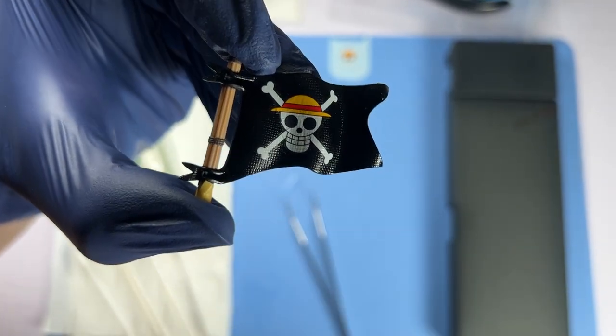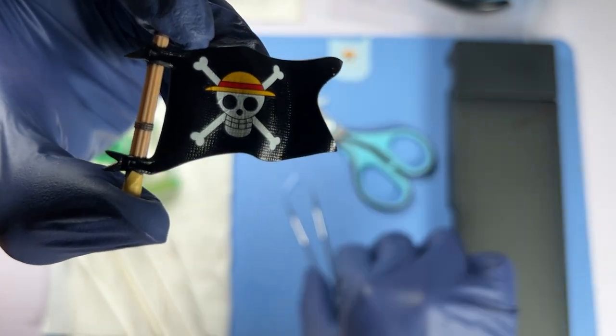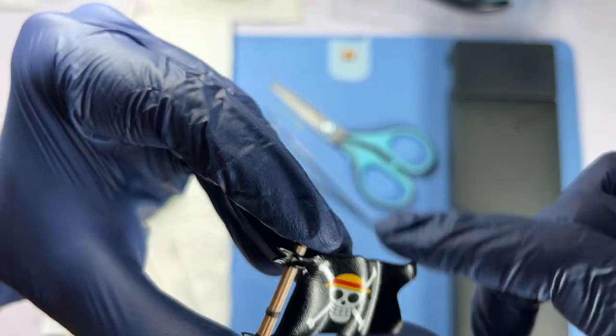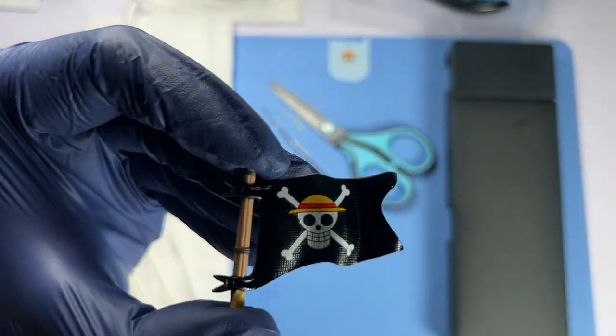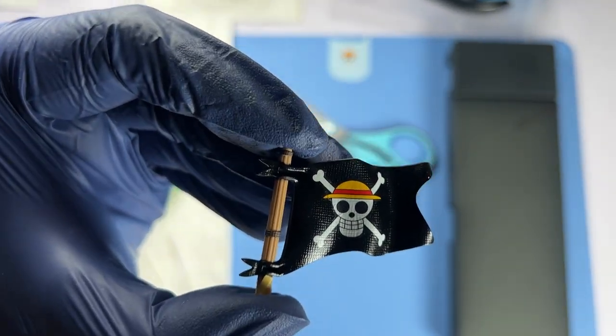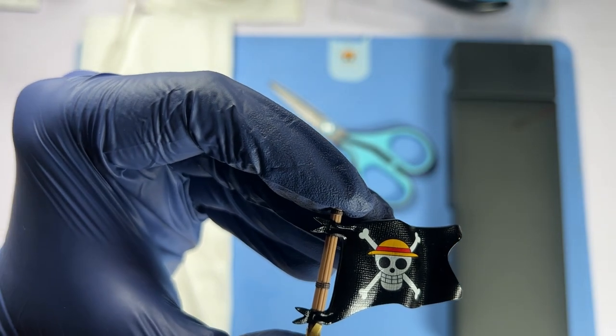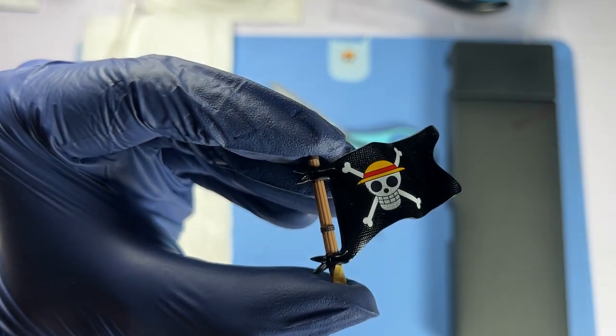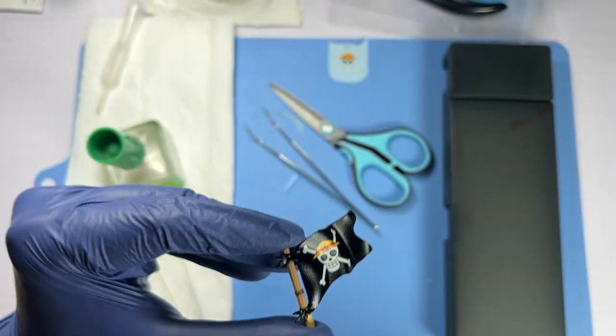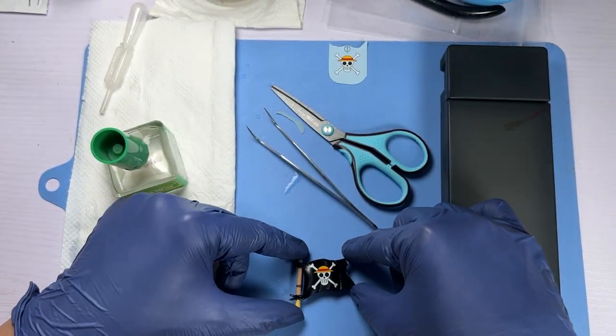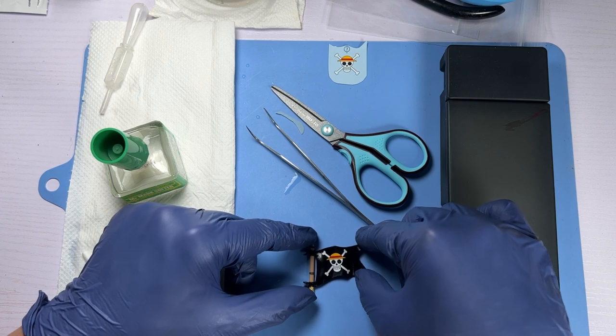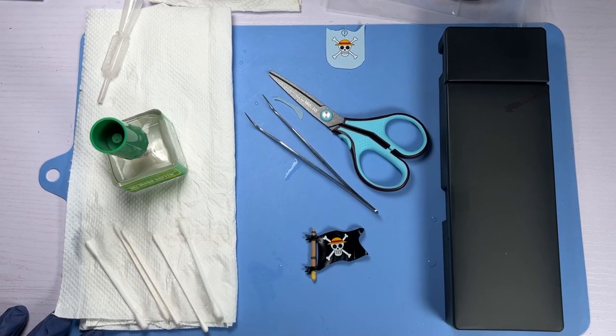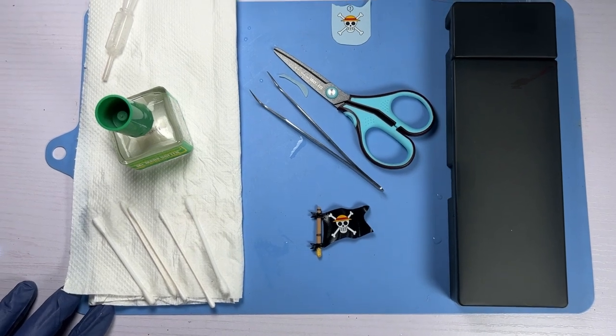But it doesn't always work out the way you want it to. So next, I'm going to show you how to deal with a water decal that gets damaged during the transfer process. But before we move on to the second part of our tutorial, let's have another close-up view of the straw hat pirate symbol water decal on the flag part, a water decal application process that went off without a hitch.